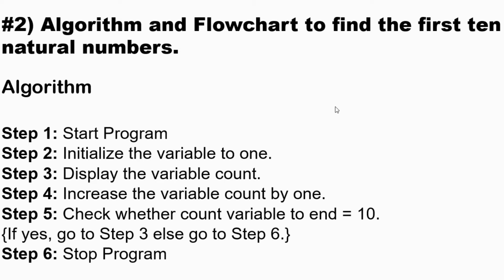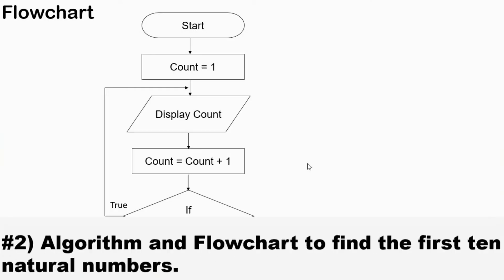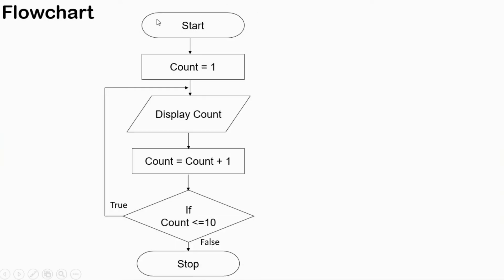Question number two: find an algorithm and flowchart to display the first ten natural numbers. In the algorithm: Step 1: start program. Step 2: initialize the variable count to one. Step 3: display the variable count. Step 4: increase the variable count by one. Step 5: check whether the count variable equals ten — if yes, go to step three; else go to step six. Step 6: stop program.